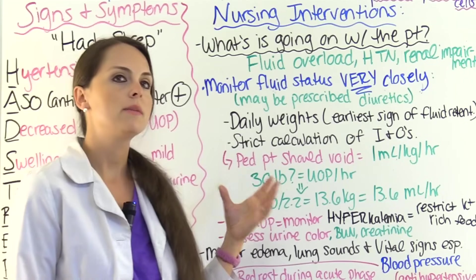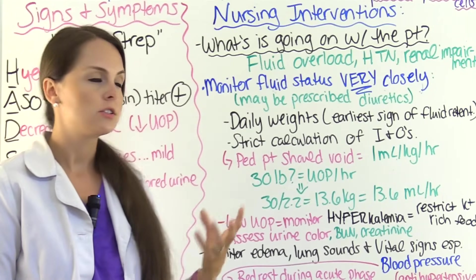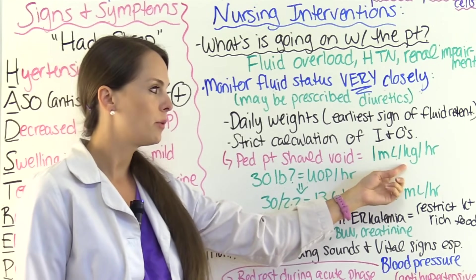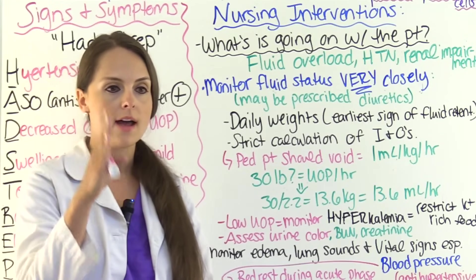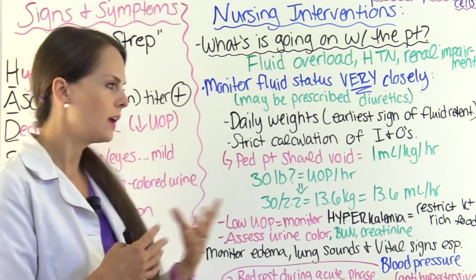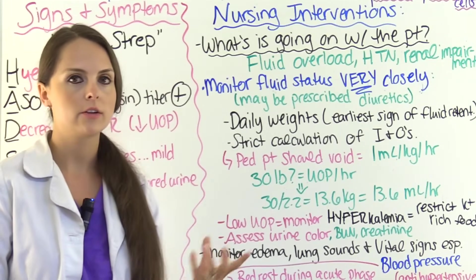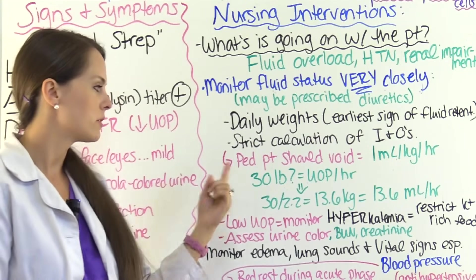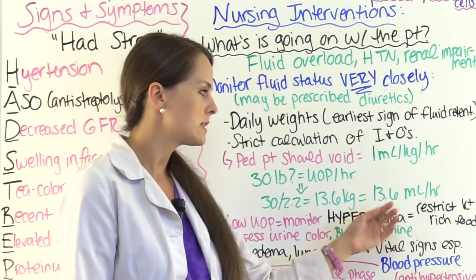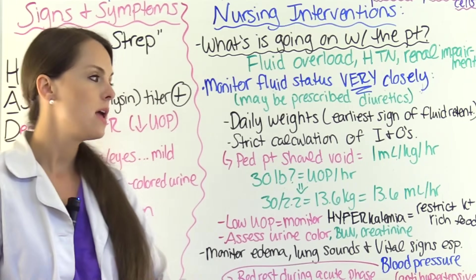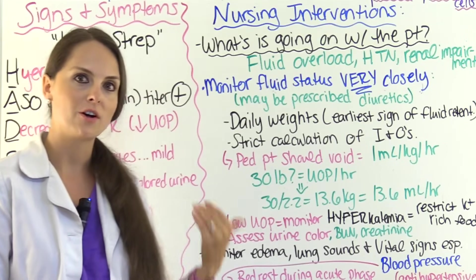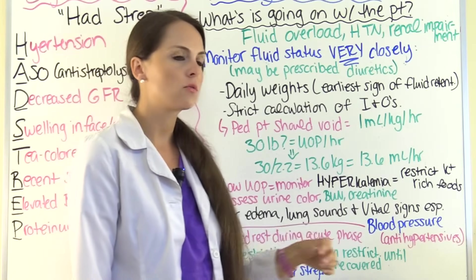With our pediatric patient — since this condition tends to affect children — make sure urinary output is at least 1 milliliter per kilogram per hour. For example, if the patient weighs 30 pounds, convert to kilograms: 30 divided by 2.2 equals 13.6 kilograms, so they should produce 13.6 milliliters of urine per hour. If output is low, monitor for hyperkalemia and restrict foods rich in potassium.